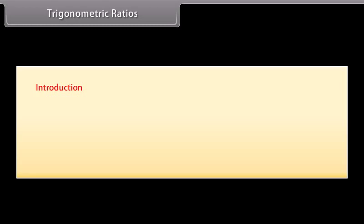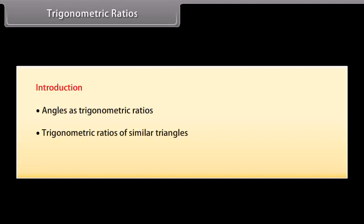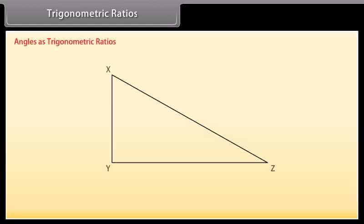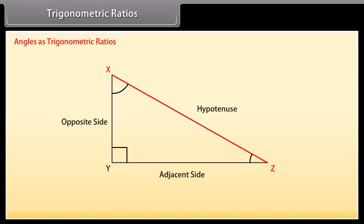Let us begin our introduction to trigonometry with trigonometric ratios. We will express the angles as trigonometric ratios, compare trigonometric ratios of similar triangles, and solve examples. Look at triangle XYZ, right-angled at Y. Angles X and Z are both acute. XY is the side opposite to angle Z, YZ is the side adjacent to angle Z, and XZ is the hypotenuse.